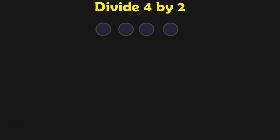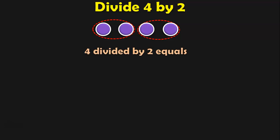Divide 4 by 2. We have 4 objects and we have to divide it by 2. I am drawing a circle around the first 2 objects and then around the next 2 objects. So this is dividing 4 by 2. How many groups am I getting here? I am getting 2 groups and each group has 2 objects each. So 4 divided by 2 equals 2. Let us do another example to understand this concept better.